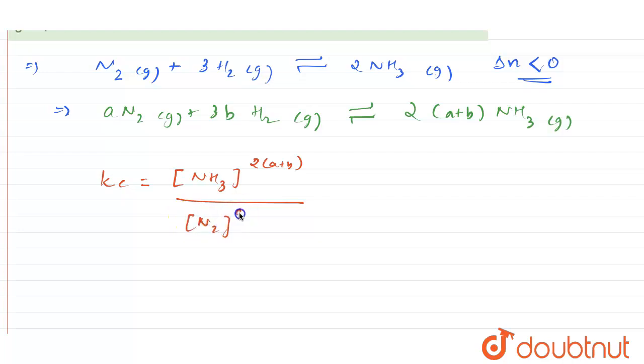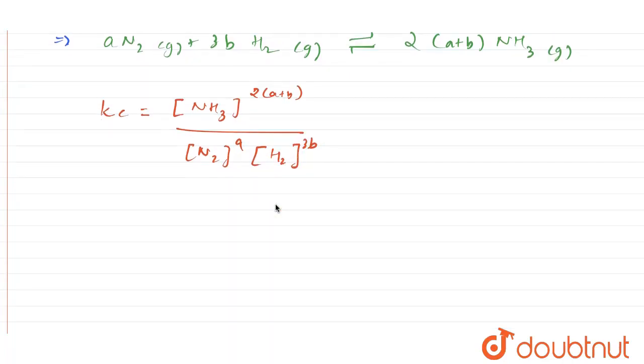So it is nitrogen raised to A multiplied by hydrogen raised to 3B. So this will be the value for Kc.